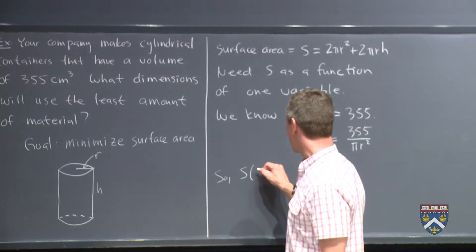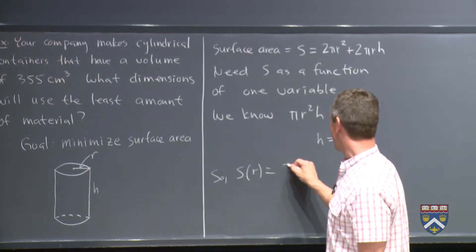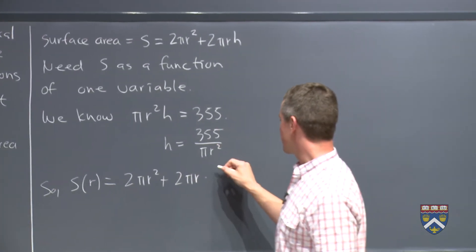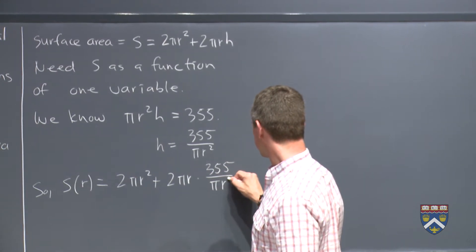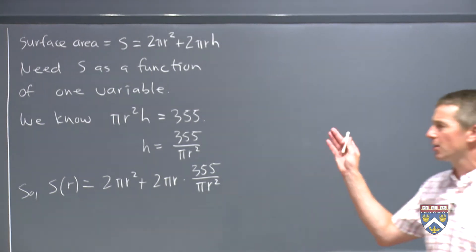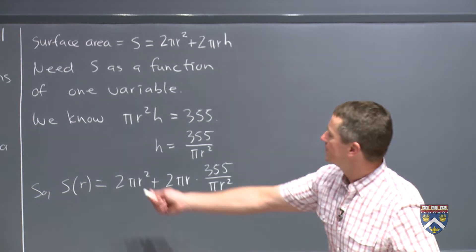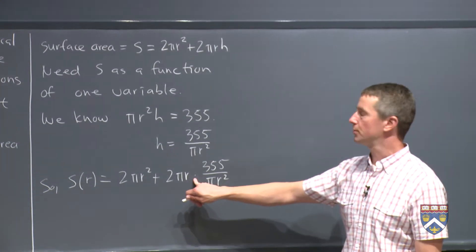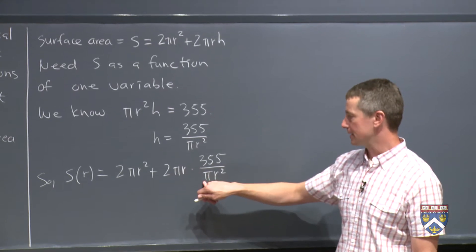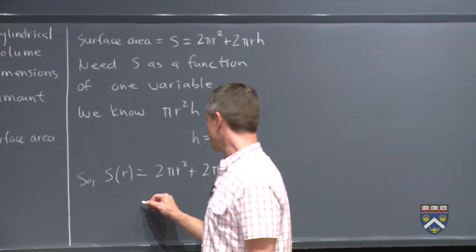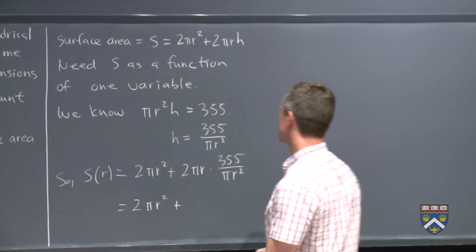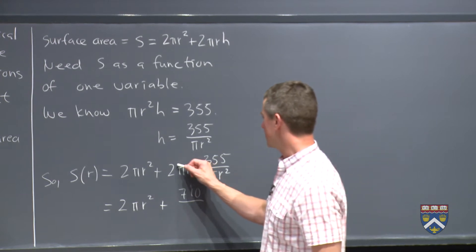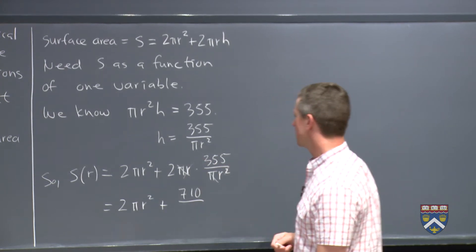So now we have s entirely as a function of r. So s of r is 2 pi r squared plus 2 pi r times h, which we've just figured out is this. So now we've got s down to just one variable, so now we can sort of forget all about the situation and just do the calculus. As written, what rule will we need to take this derivative? We will need the product rule because of this. But often you can avoid the product rule and the quotient rule in these problems by doing a little simplifying. So here the pi's will cancel, right? And an r from the top will cancel one of the r's on the bottom. So this whole thing will simplify to what? I'll get a 2 times 355 on the top, which is 710 if I cancel the pi and cancel one of those r's. And in the bottom I just have an r.